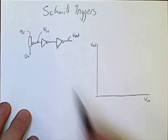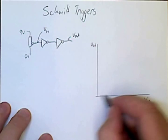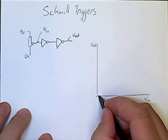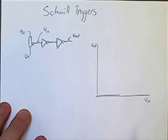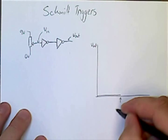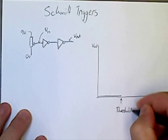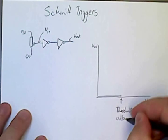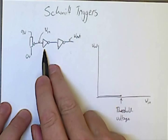If we gradually increase the voltage on the input of that first inverter, we see that as we increase the input voltage, going from left to right on our graph, we'll reach some voltage which we call the threshold voltage. This threshold voltage is the point where this circuit will change state.